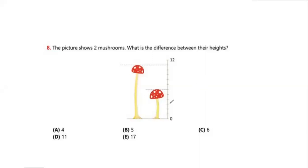Question 8: The picture shows two mushrooms. What is the difference between their heights? Counting the units on each mushroom: one mushroom is 6 units tall and the other is 11 units tall. The difference is 11 minus 6, which equals 5.